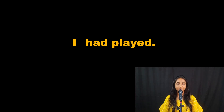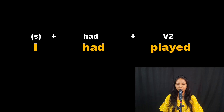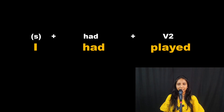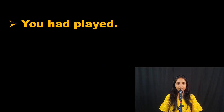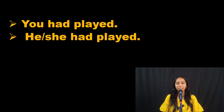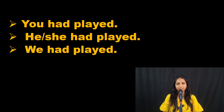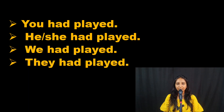I had played. So we have the subject plus 'had' plus the V2 form of the verb, i.e. the past form of the base verb 'play'. Let's look at the other sentences: you had played, he or she had played, we had played, and they had played.